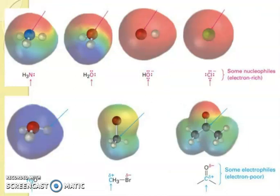Now friends, you can see NH3, H2O, OH minus, CN minus, some nucleophiles, electron-rich. Now you can see some electrophiles, electron-poor. H3O plus, CH3Br and here carbocation.